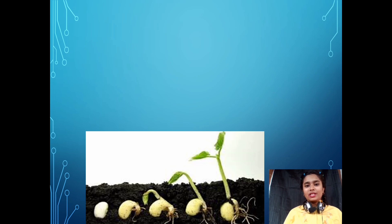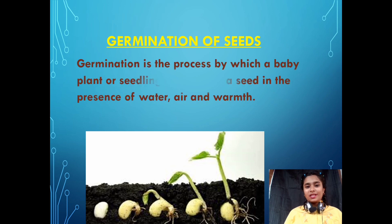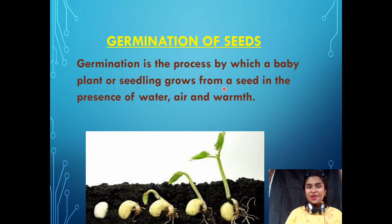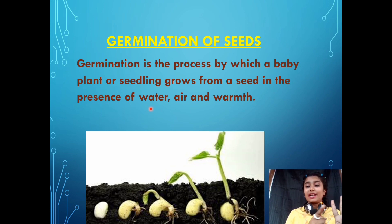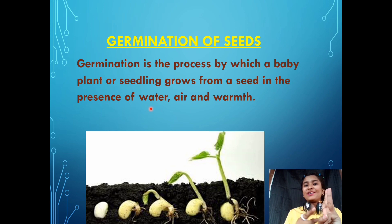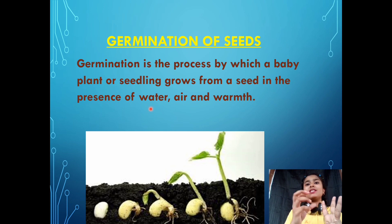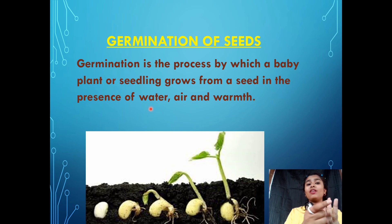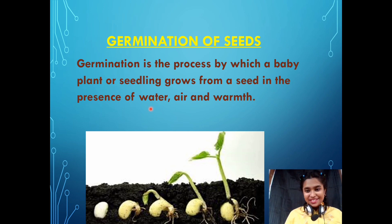Now we will study seed germination in detail. Germination is the process by which a baby plant or seedling grows from a seed in the presence of three important things. The three important things needed for seed germination are: water from the soil, air trapped in the soil, and warmth or heat from the sunlight.